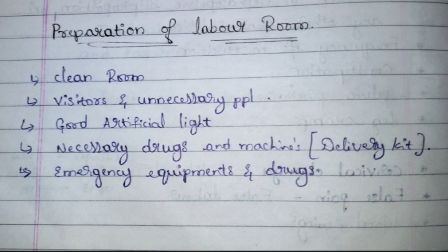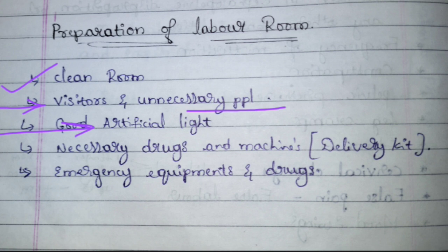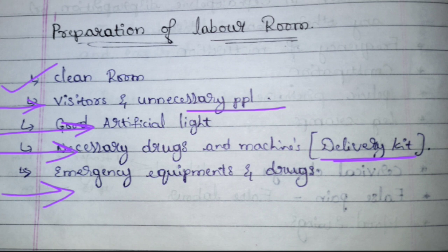Preparation of the labor room: it should be very clean. Avoid unwanted visitors and unnecessary people. Good artificial light is very important because natural light won't penetrate the room. Necessary drugs and machines should be arranged by the nurse. The delivery kit and emergency equipment and drugs should always be present in the labor room.